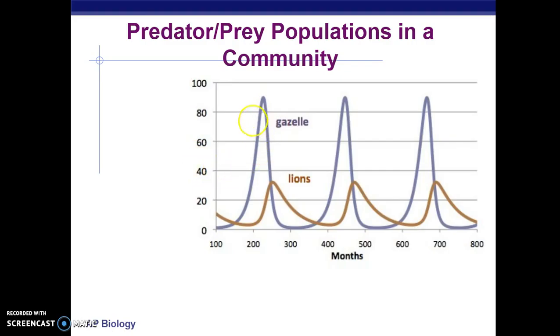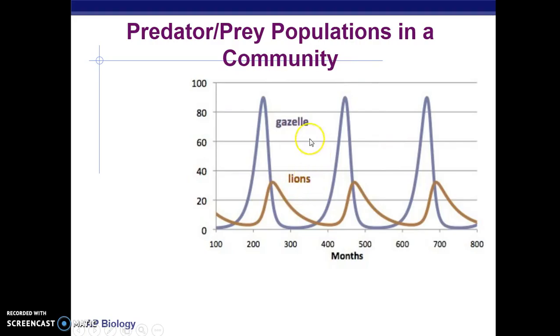The key points here are the delayed effect of the gazelles spiking and then the lions spiking, and the importance of the equilibrium between predator and prey, which keeps the entire community stable.